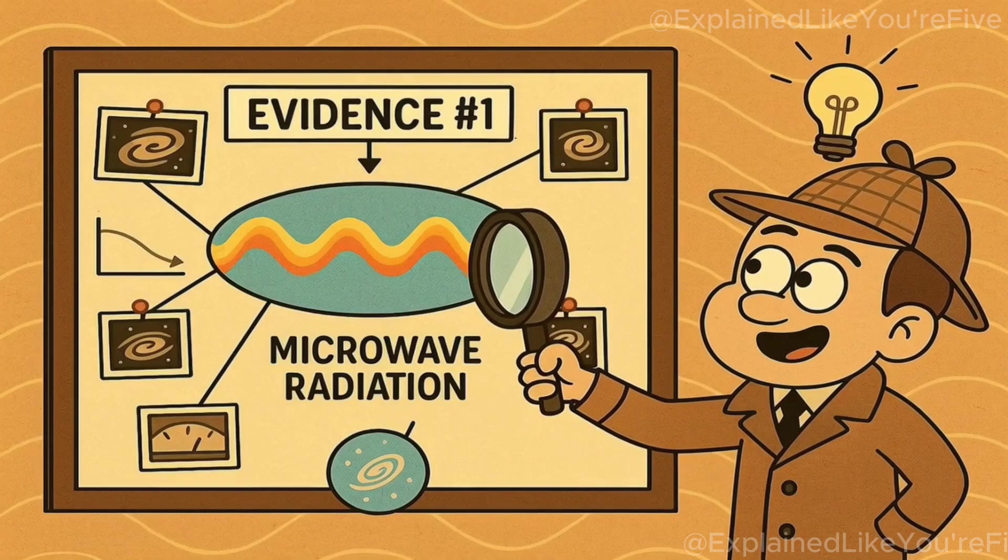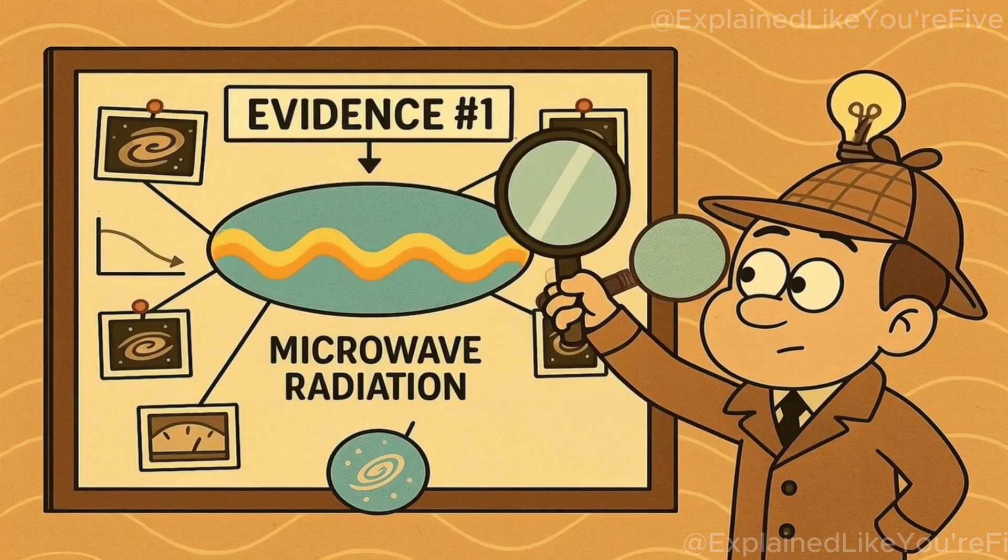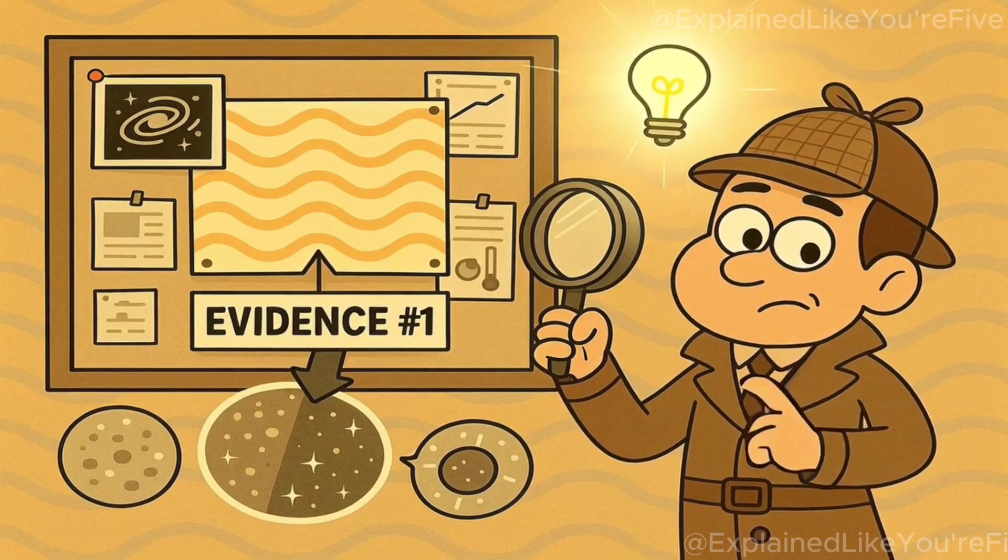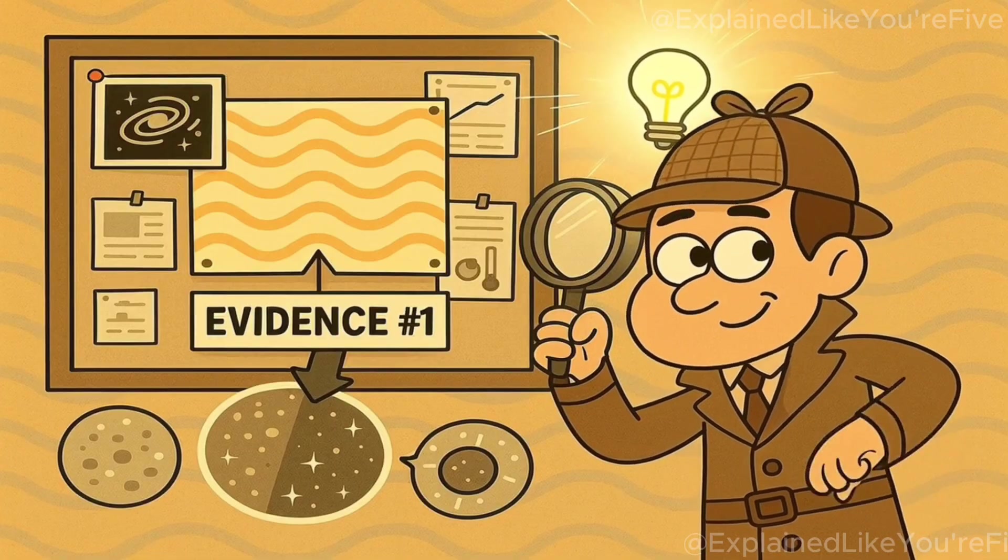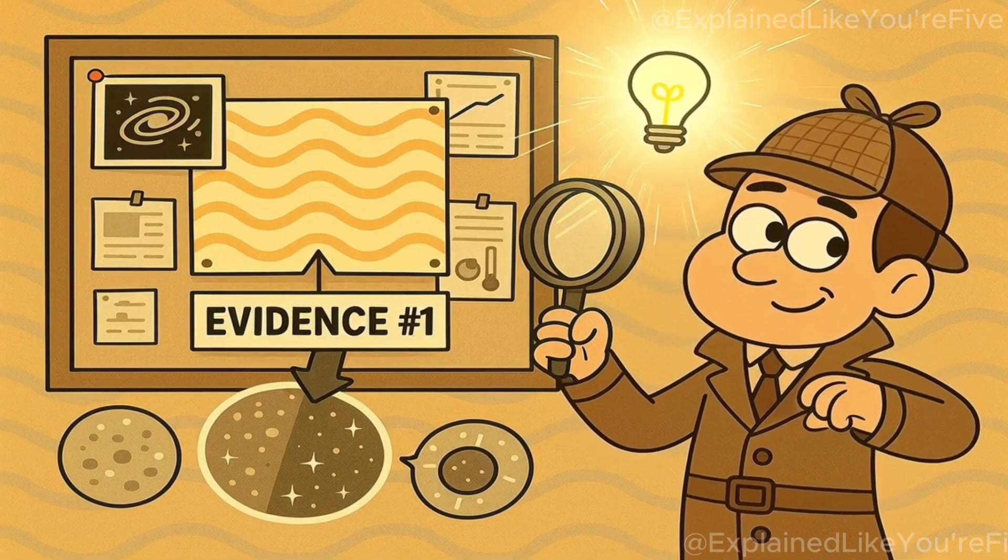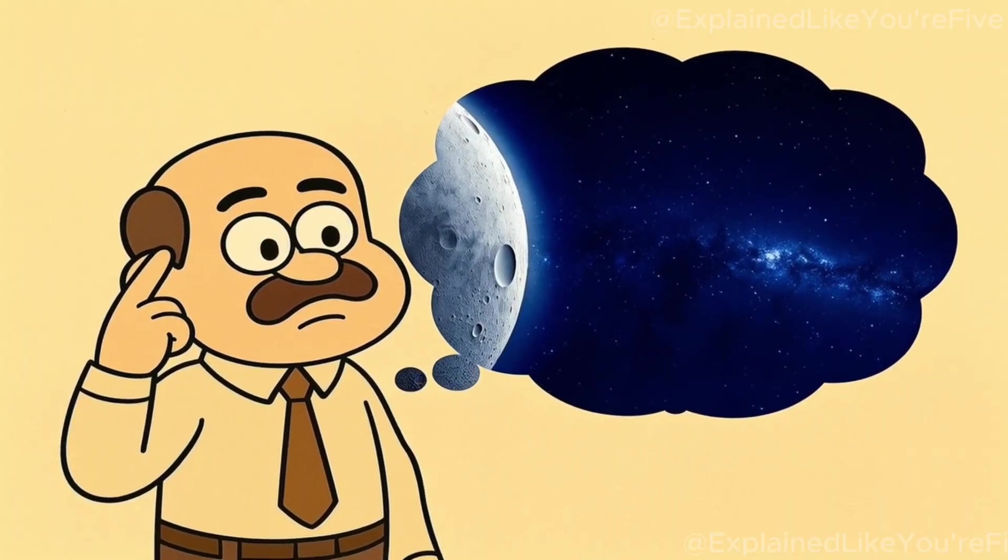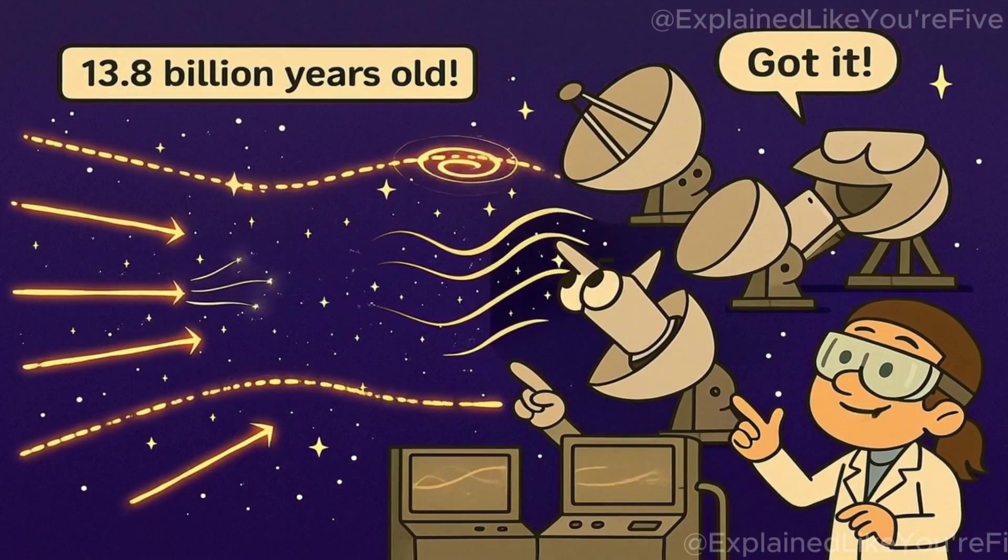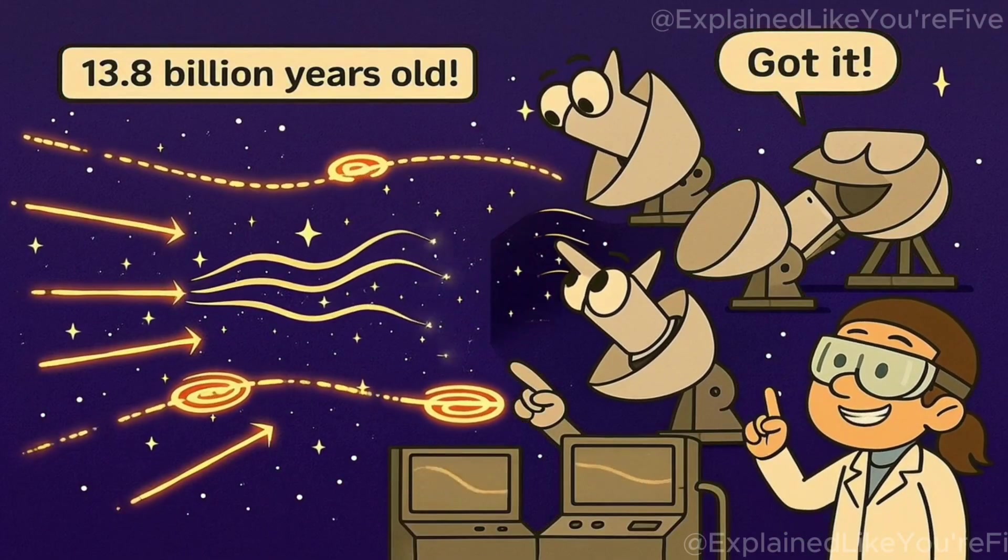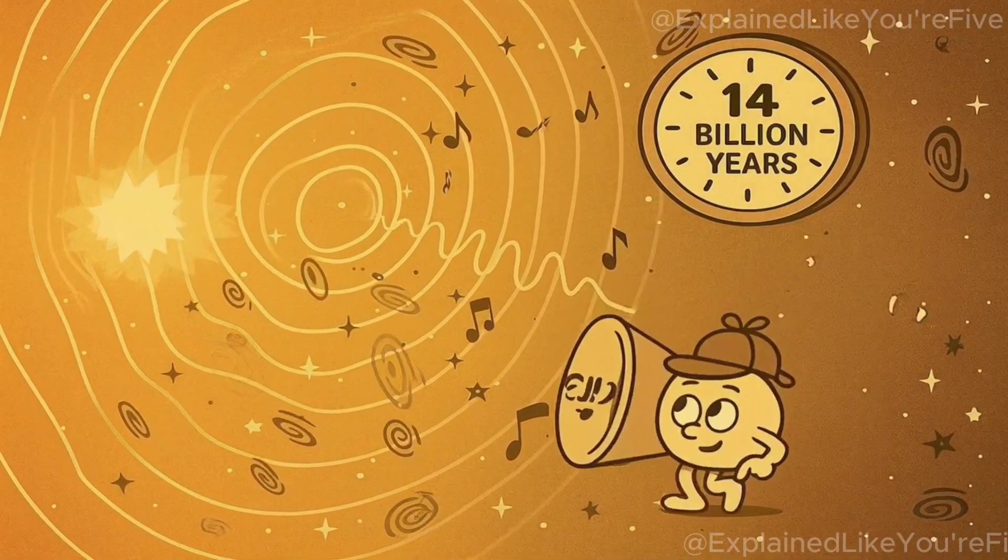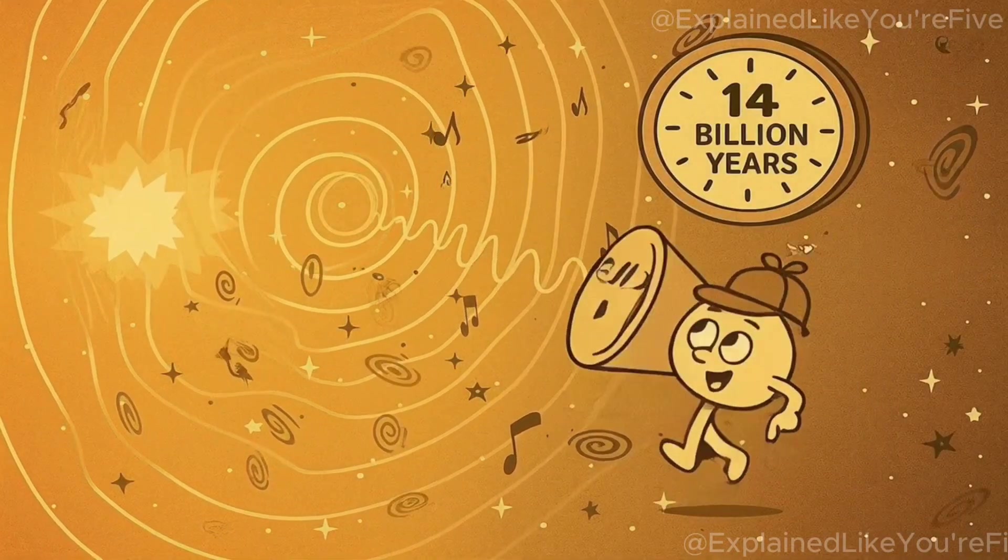One of the most amazing pieces of evidence for the Big Bang theory is something called the cosmic microwave background radiation. Remember how I mentioned about 380,000 years after the Big Bang, the universe became transparent for the first time? Well, at that moment, light started traveling freely through space. The light is actually still traveling through space today, and we can detect it with special telescopes. It's like an echo of the Big Bang that's still reverberating through the universe nearly 14 billion years later.